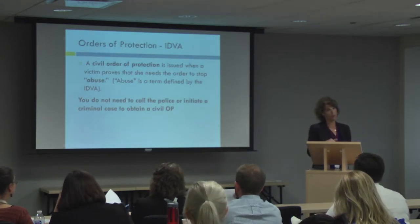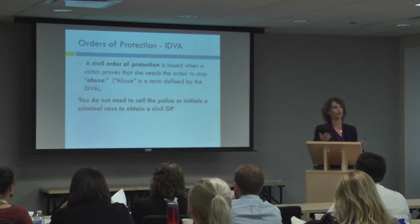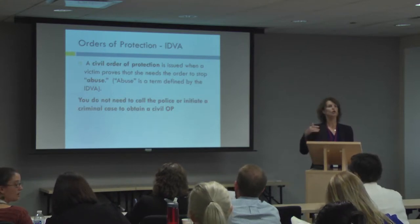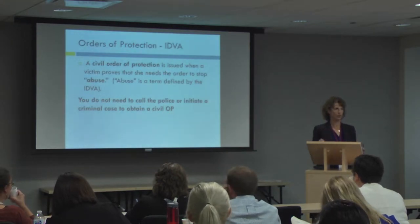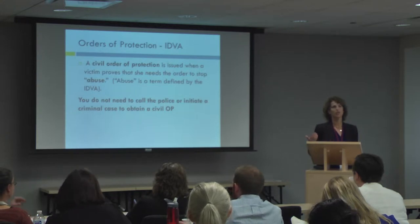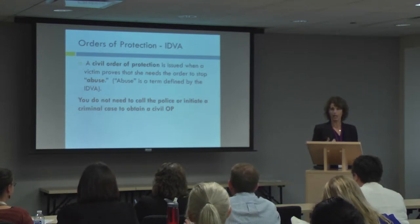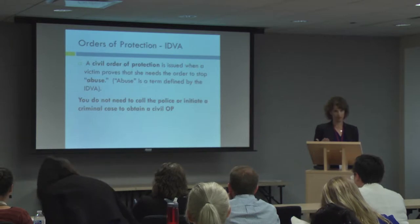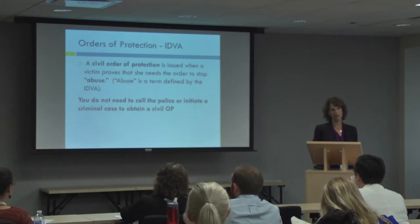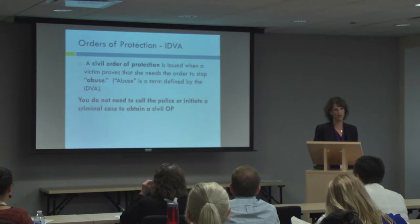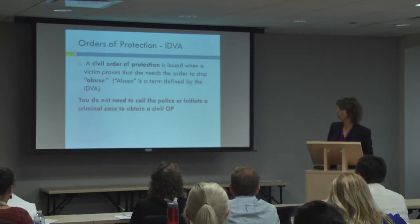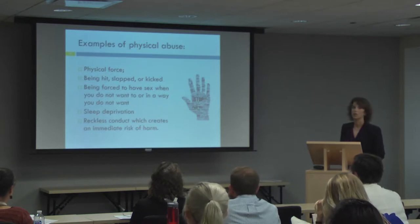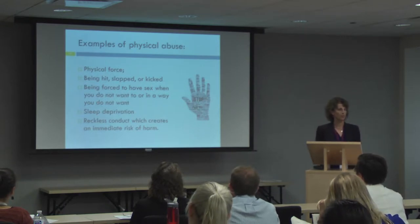There is no prerequisite to getting an order of protection other than being abused by a domestic partner. You don't have to have called the police, you don't have to have a police report, you don't have to have medical records confirming abuse — you can just walk into court and testify. It is a civil proceeding; your burden of proof is a preponderance of the evidence, so you can walk into court and convince a judge by preponderance of the evidence that you were abused. So what is abuse? As I said, it's a term of art, defined by the statute.